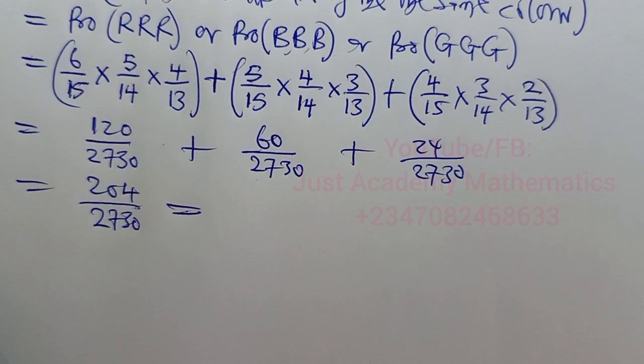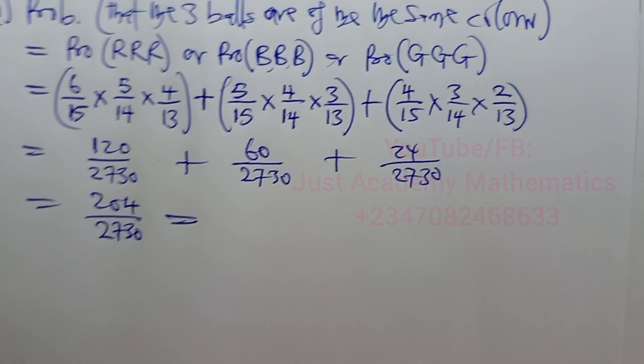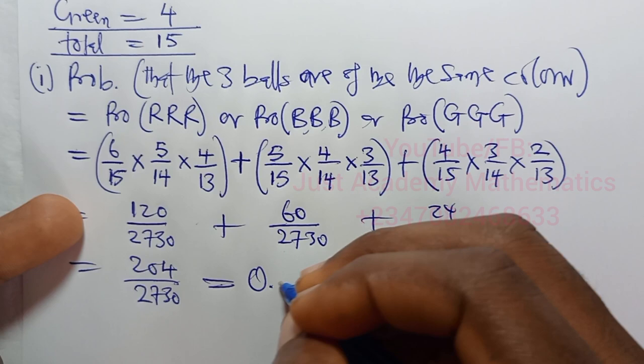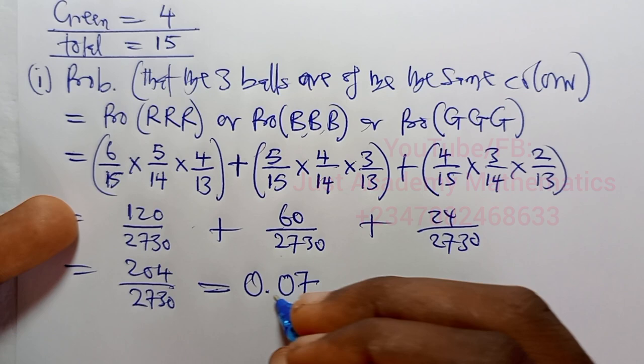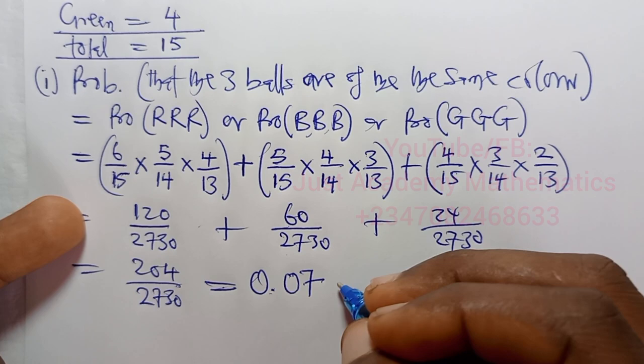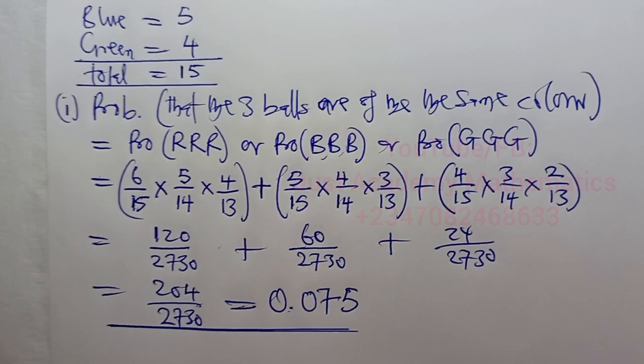Dividing 204 by 2730 gives us 0.0747. Since we need three decimal places, that is 0.075. That is the answer to three decimal places for part (i).